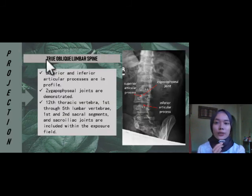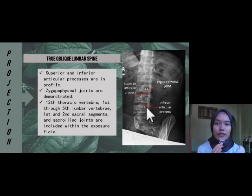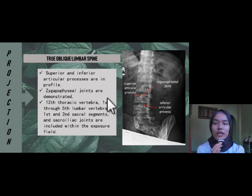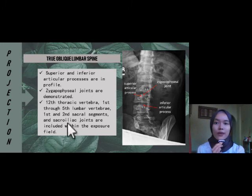For the true oblique lumbar spine projection, first, the superior and inferior articular processes are in profile. The zygapophysial joints are demonstrated. The 12th thoracic vertebra, 1st through 5th lumbar vertebra, 1st and 2nd sacral segment, and sacroiliac joint are included within the exposure field.